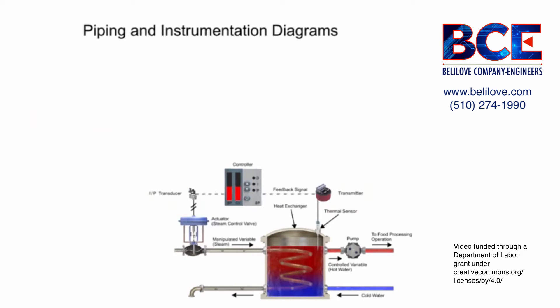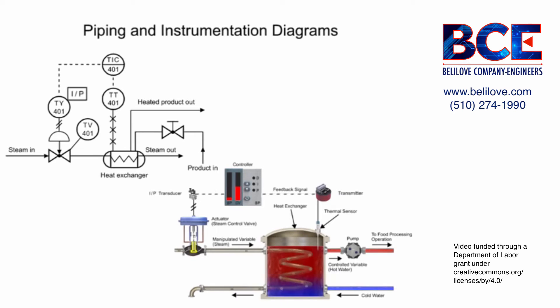Comparing a heat exchanger to the piping and instrumentation diagram illustrates the symbol's function within a process. Steam is conveyed through a pipe into a sealed enclosure that acts as a heat exchanger. As the water passes through the heat exchanger, the temperature of the water is elevated.